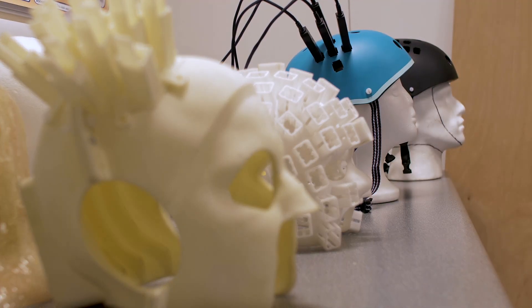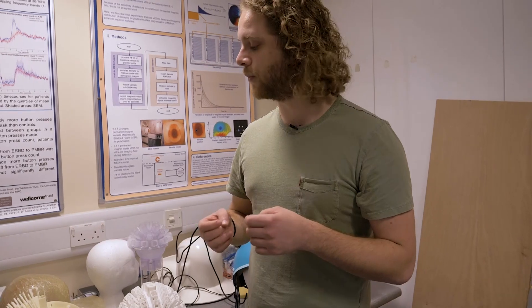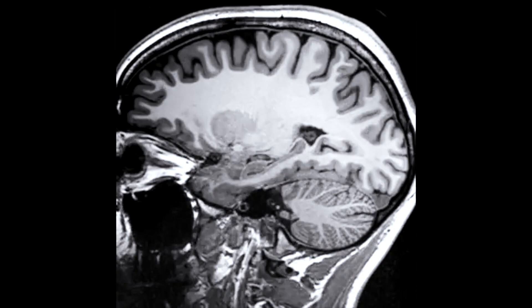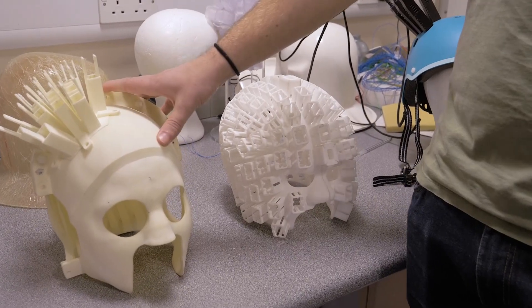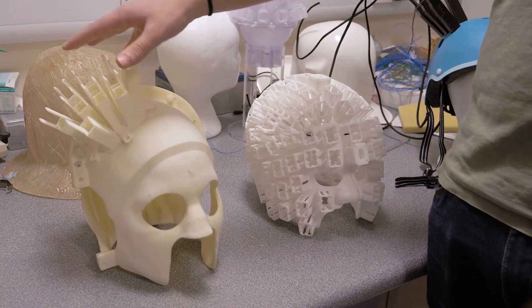The way that we do that is we use a 3D printed one that's tailored particularly for the person being scanned. This is based on their MRI scan, so it fits them perfectly. When we only had a few sensors, we used this one, and that fit just over a particular region that we were interested in.